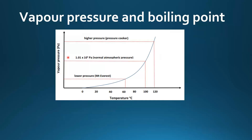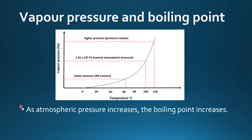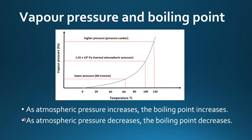On this graph you can see the effect of changing atmospheric pressure on the boiling point of water. At higher atmospheric pressure, for example in a pressure cooker, the boiling point of water increases to about 120 degrees. At lower atmospheric pressure, for example at the top of Mount Everest, the boiling point of water decreases to about 60 degrees. So as atmospheric pressure increases the boiling point increases, and as atmospheric pressure decreases the boiling point decreases.